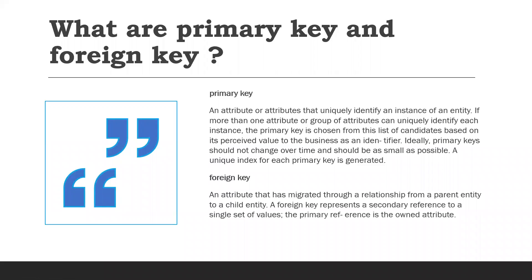What are primary key and foreign key? A primary key is a column or set of columns in a table whose values uniquely identify a row in the table — an attribute or attributes that uniquely identify an instance of an entity. If more than one attribute or group of attributes can uniquely identify each instance, the primary key is chosen from this list of candidates based on its perceived value to the business as an identifier. Ideally, primary keys shouldn't change over time and should be as small as possible, and a unique index for each primary key is generated.